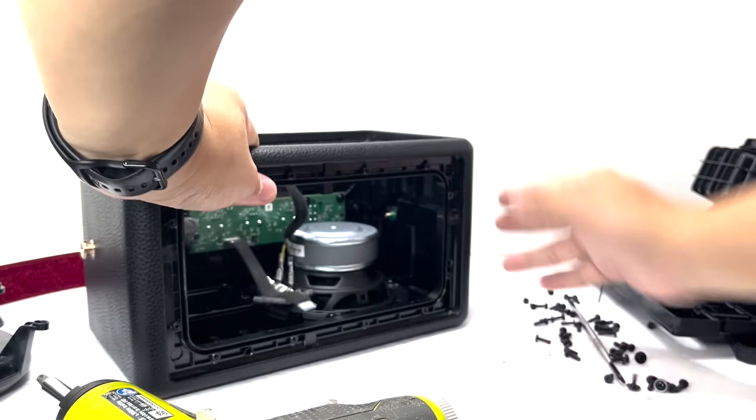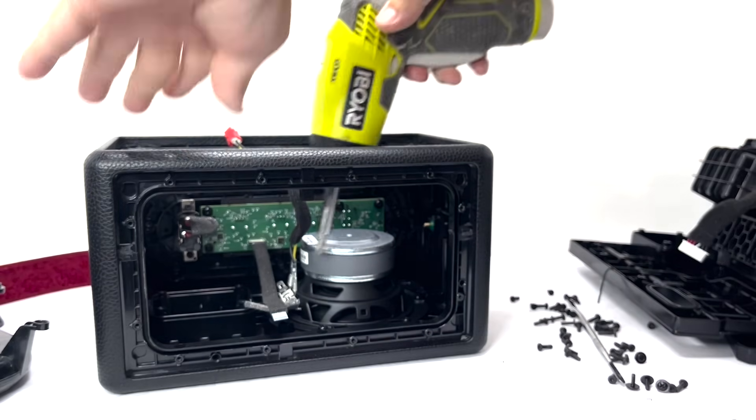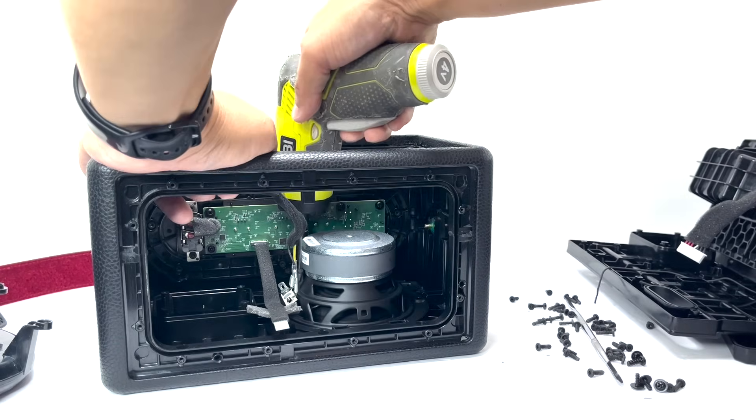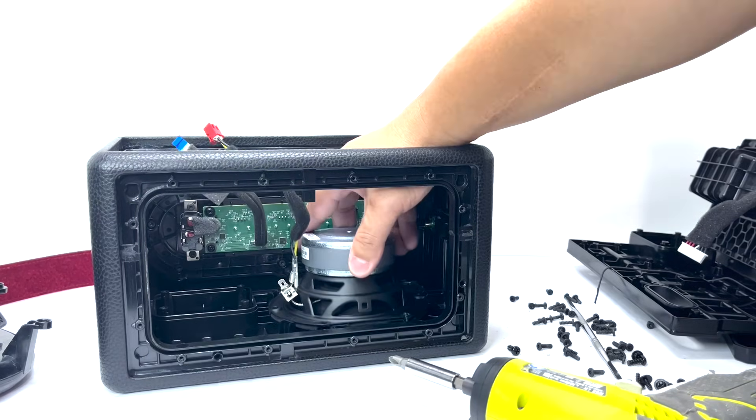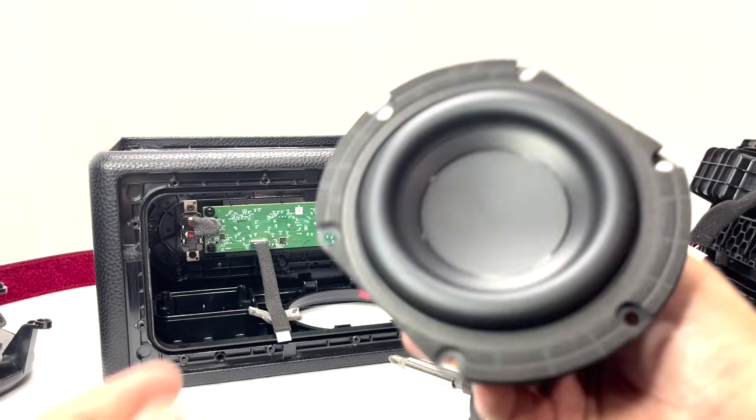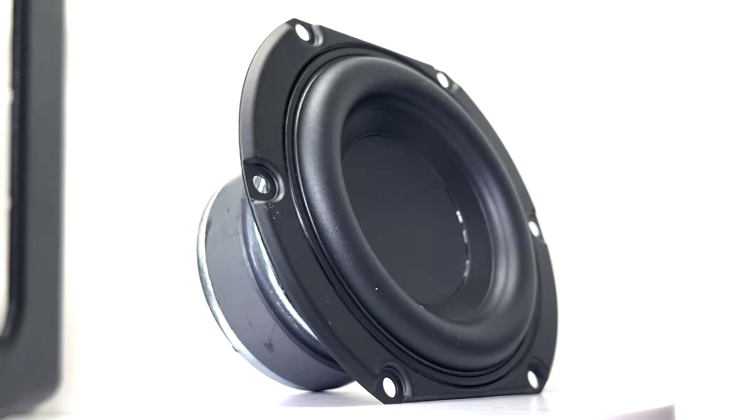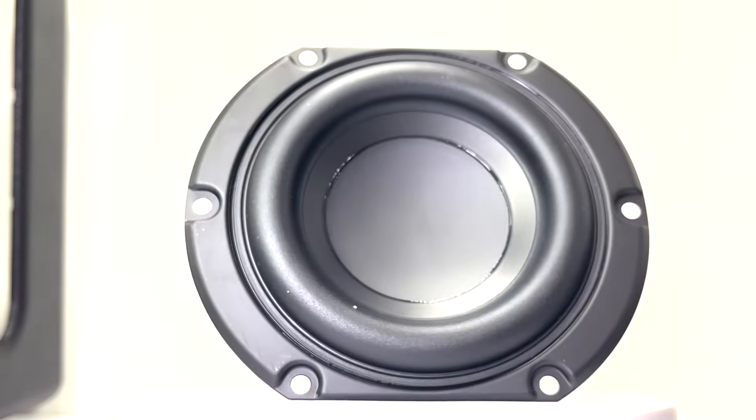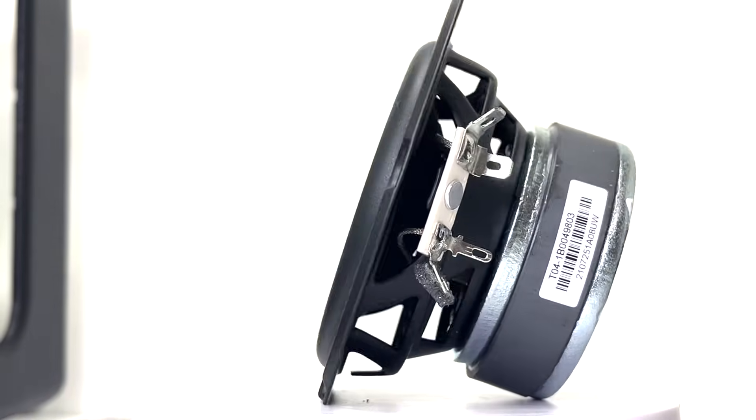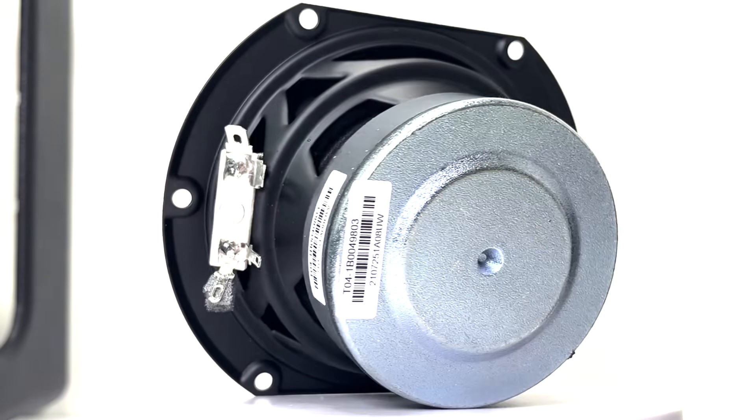Now to remove the woofer, we will need to remove 6 screws. Here we have the woofer, measuring 4 inches and delivering a powerful 30-watt output. It's responsible for producing the deep resonant bass that defines the signature Marshall sound.